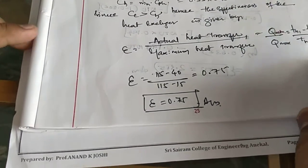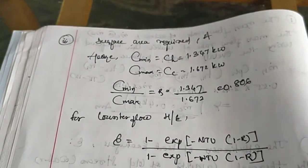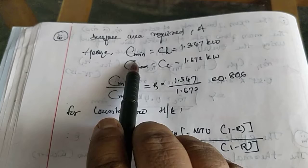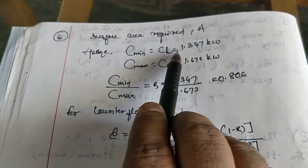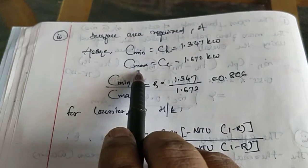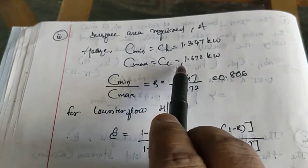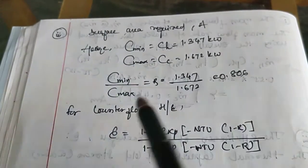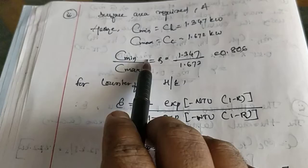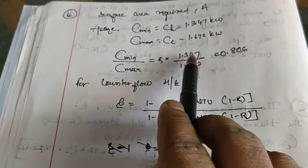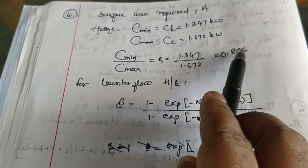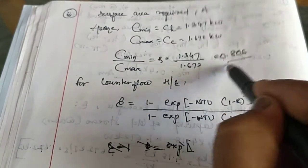Next, we find the surface area required. For this, C_minimum = C_H = 1.347 kW and C_maximum = C_C = 1.672 kW. The ratio R = C_min / C_max = 1.347 / 1.672 = 0.806. This R value is for the counter flow heat exchanger.